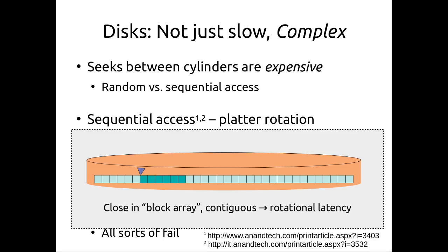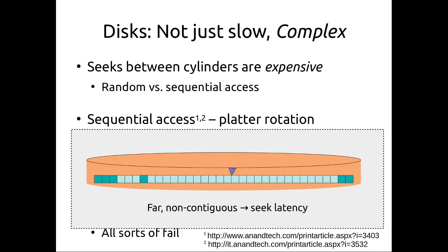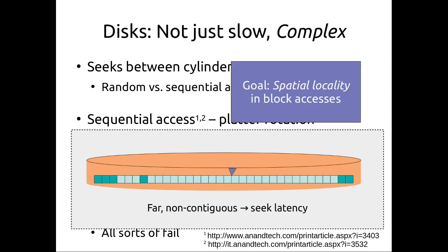In pictures: if the head is near a range of blocks and we access multiple sequential contiguous blocks (the darker teal blocks), that's rotational latency — fewer seeks and therefore faster. On the other hand, if our head is somewhere and we need to access blocks spread out across the disk, that's random access — far apart, not contiguous — using seek latency, which is two orders of magnitude less effective given the physics of these disks.